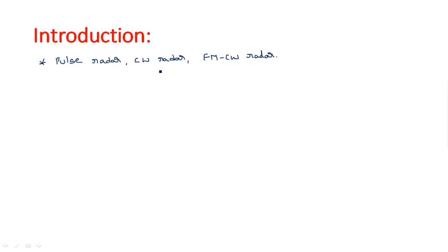CW radar can only measure velocity, so to add range measurement as well, FMCW radar came into existence. In the FMCW radar transmitting section, a frequency modulated signal is transmitted, and in the receiving section the beat frequency consisting of both range frequency and Doppler frequency is calculated. Now in this video I am going to introduce two more interesting radar systems: MTI radar and pulse Doppler radar.